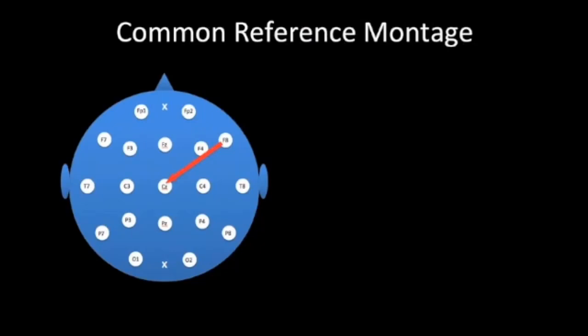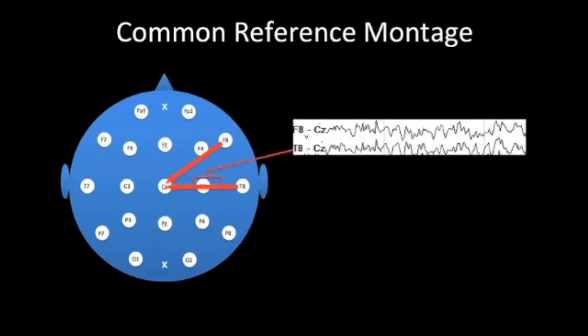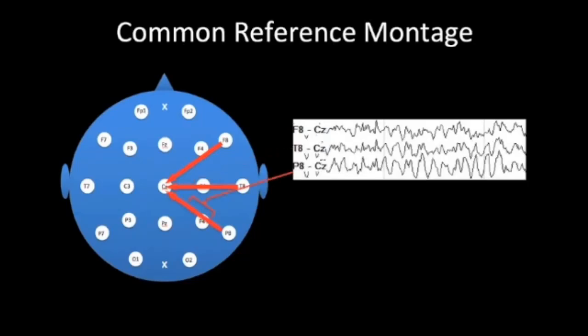The second type of montage is the common reference montage, where we compare the signal at every electrode to a single common reference. One of the most common is the CZ montage, comparing every electrode to CZ. The first channel is F8 to CZ, then T8 to CZ, then P8 to CZ, generating a chain in much the same way as the anterior-posterior bipolar montage.